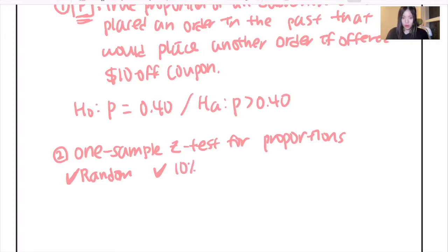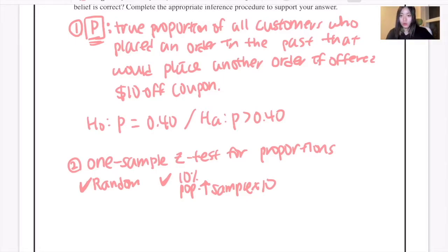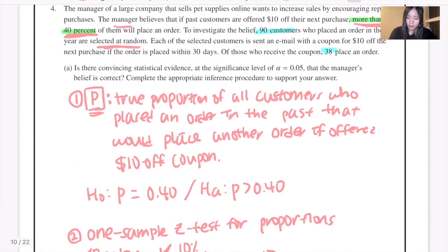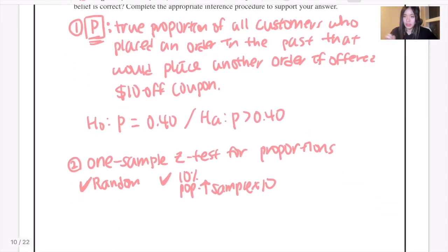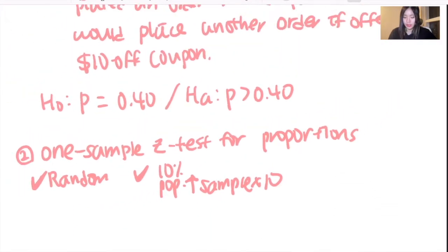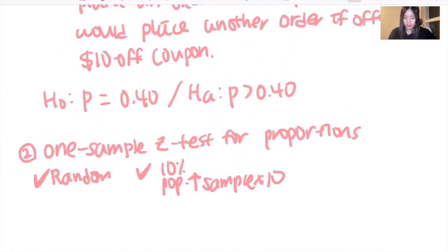And also, we need to check the 10% rule, so whether the population is larger than the sample size times 10. And I think it is reasonable to assume that this condition is also met because the sample that we have consists of 90 customers. And the customers last year would be probably larger than 900 customers, and that's pretty reasonable to assume. So I think this condition is also met.